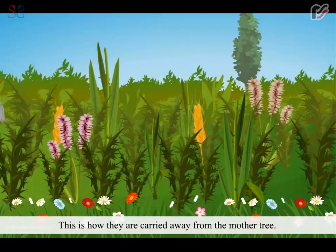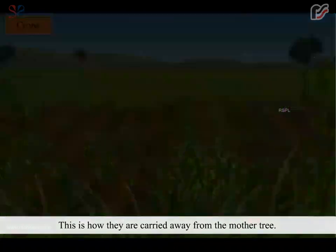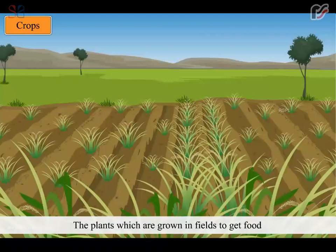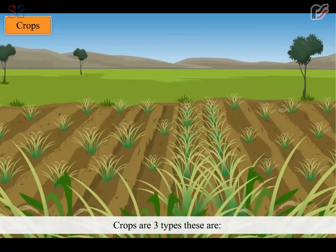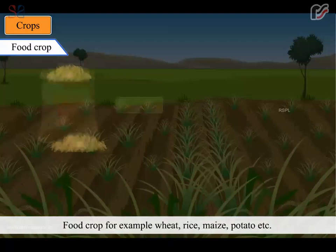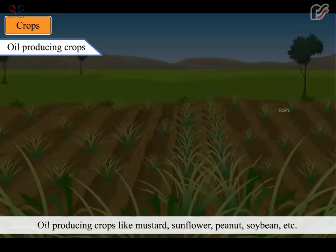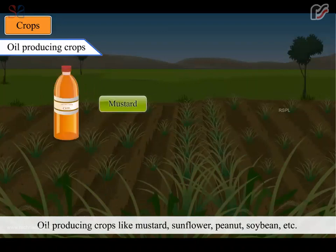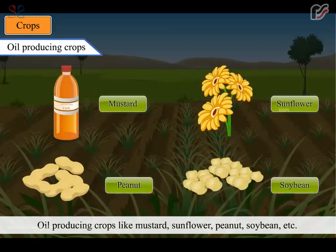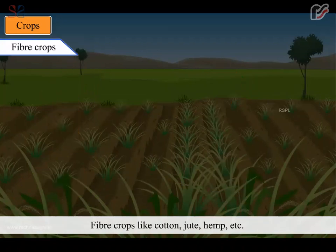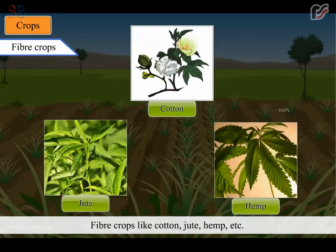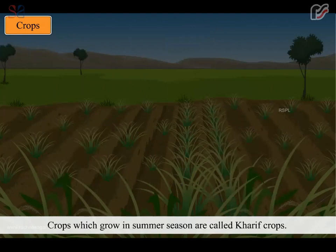The plants which are grown in fields to get food and other useful things are called crops. Crops are of three types: food crops (for example, wheat, rice, maize, potato etc.), oil producing crops like mustard, sunflower, peanut, soybean etc., and fiber crops like cotton, jute, hemp etc. Crops which grow in summer season are called kharif crops.